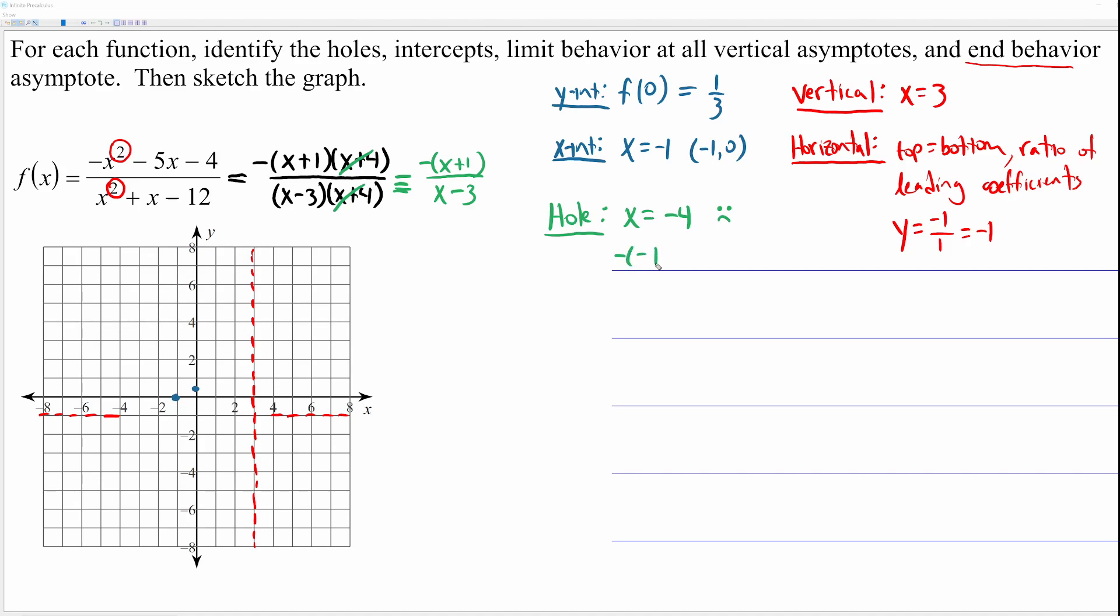So, negative negative four plus one over negative four minus three. So, let's do a little math. Negative four plus one, that's negative three. But there's a negative, so this is positive three. And then we have negative seven. So, negative three-sevenths. So, there's going to be a hole in the graph at the point negative four, negative three-sevenths. Which, again, just approximate the fraction as best you can. And let me change color to the blue that we're graphing with. So, you're going to have a hole in the graph at one, two, three, four, negative four. And then negative three-sevenths.